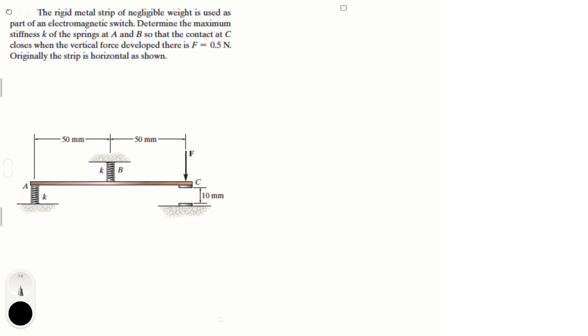Alright guys, let's do this problem that says the rigid metal strip of negligible weight is used as a part of this electromagnetic switch. Determine the maximum stiffness K of the springs A and B so that the contact C closes when the vertical force developed is 0.5 newtons. Originally the strip is horizontal as shown. Okay guys, so let's do this problem.